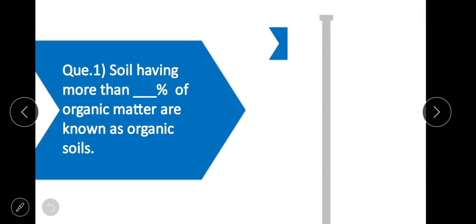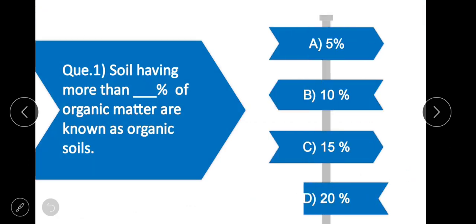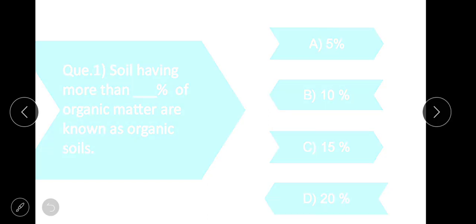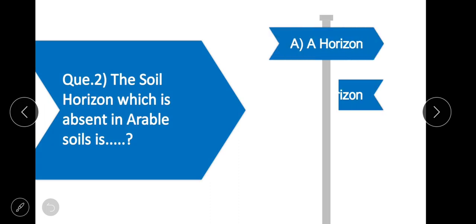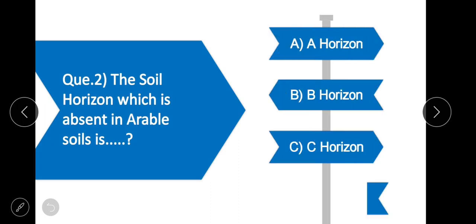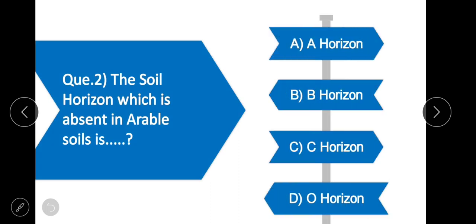Question 1: Soils having more than 20% of organic matter are known as organic soils. Question 2: The soil horizon which is absent in an Entisol — the correct option is horizon O.